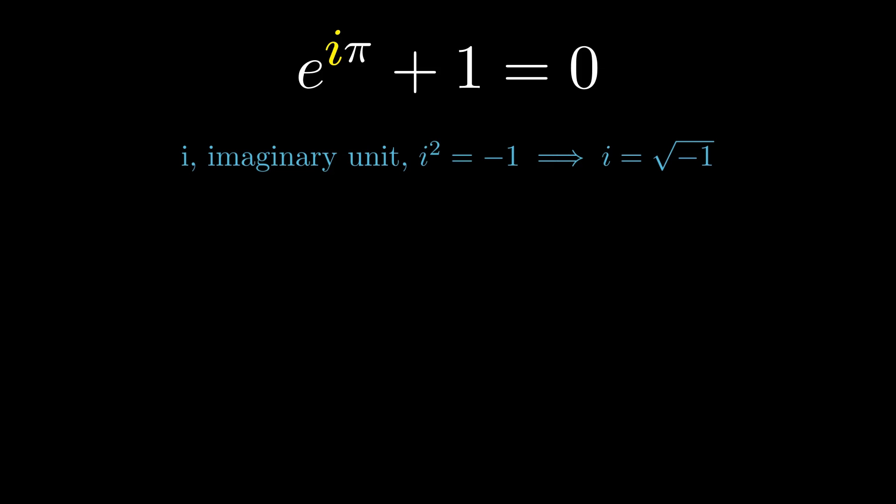i is the fundamental building block of complex numbers, expressed as a plus ib, where a and b are real numbers. This extension helps solve equations like x squared plus 1, which have no real solutions.